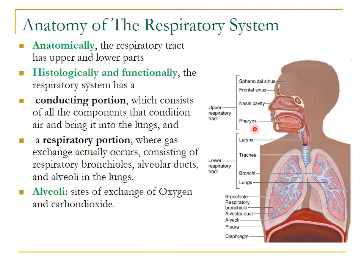Anatomically, the respiratory tract is divided into two portions. The upper respiratory tract consists of the two nasal cavities — right and left, separated by the nasal septum — and the nasopharynx. The lower respiratory tract consists of the larynx, the trachea, the right and left main bronchi, then the lobar bronchi, segmental bronchi, respiratory bronchioles, alveolar ducts, and the alveoli.